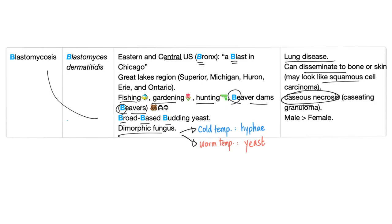It can lead to caseous necrosis, and this is one of the causes of caseating granuloma, together with histoplasmosis and tuberculosis, among others. It's also more common in males than females.